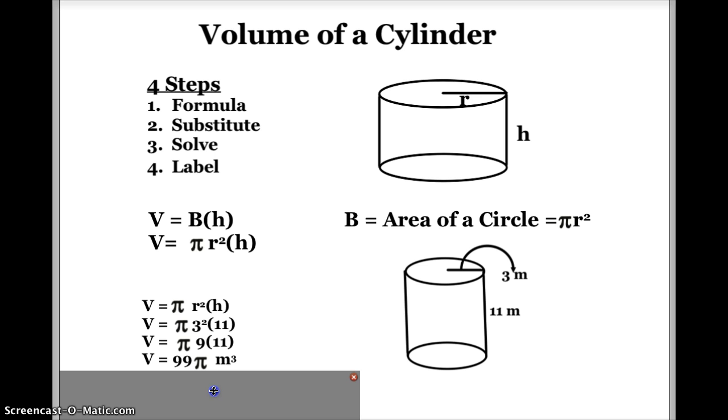So one answer that I could have, and this is an exact answer, is volume is equal to 99 pi meters cubed. My units are going to be cubed, cubic units, because I want to know how many cubes fit inside a cylinder. That's what volume means, how many cubes of something fit inside of it.